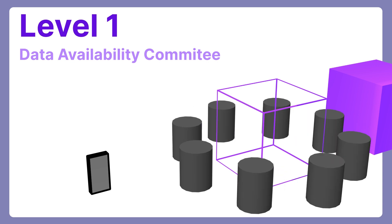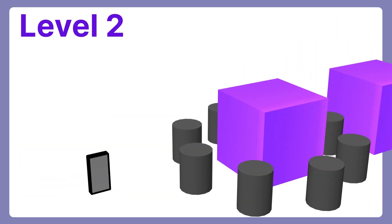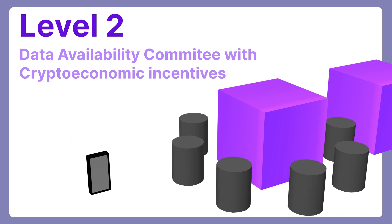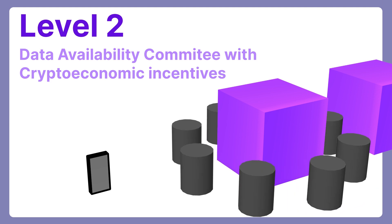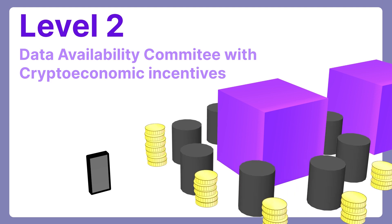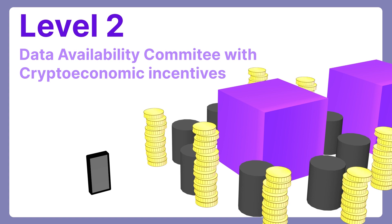Level 2: data availability committee with crypto-economic incentives. Similar to Level 1, but there is a crypto-economic incentive like stake that backs it up. This is where most Layer 1s are at. This is good, but security only scales with the amount of money behind it. Level 3: data availability sampling without an honest minority of light nodes.